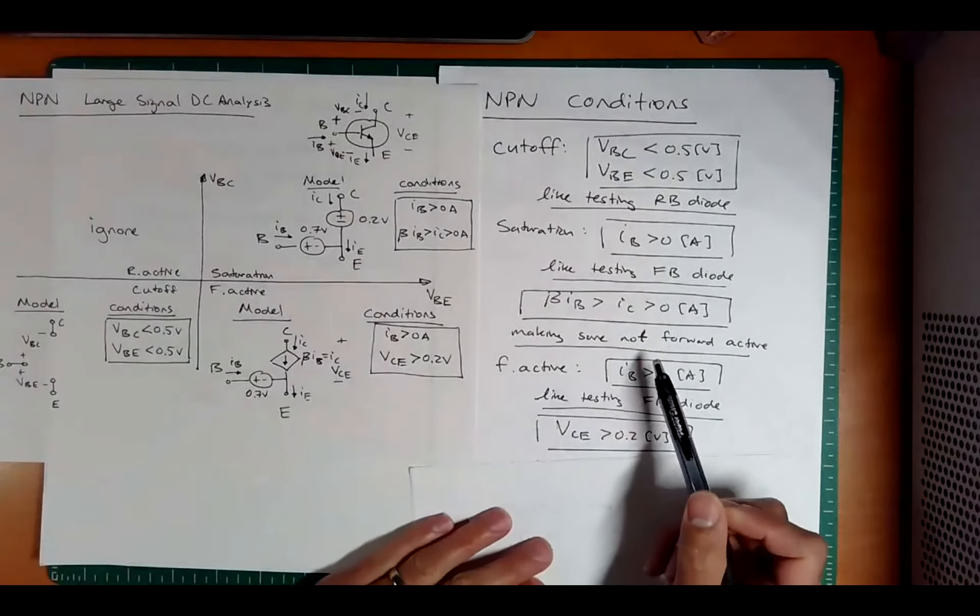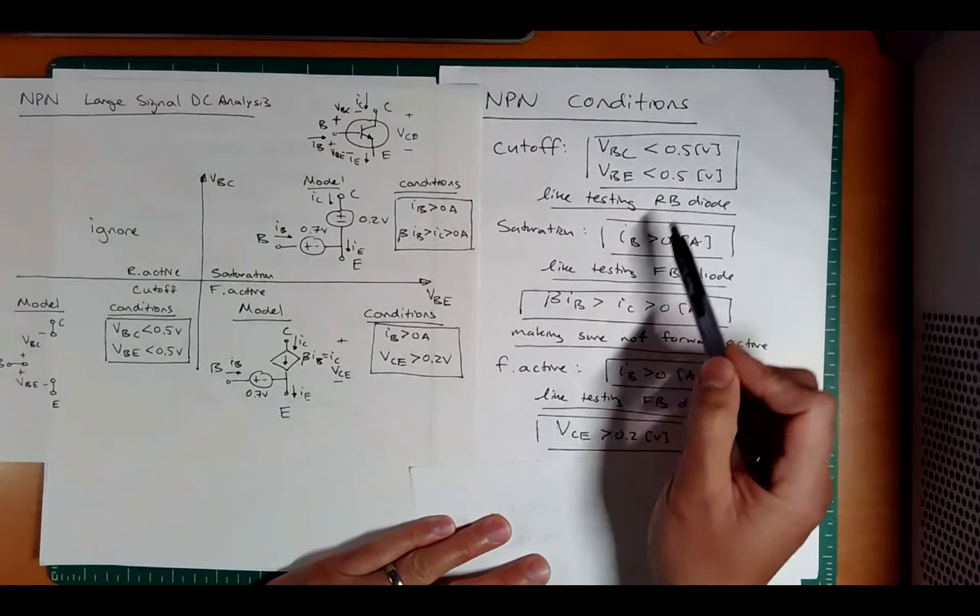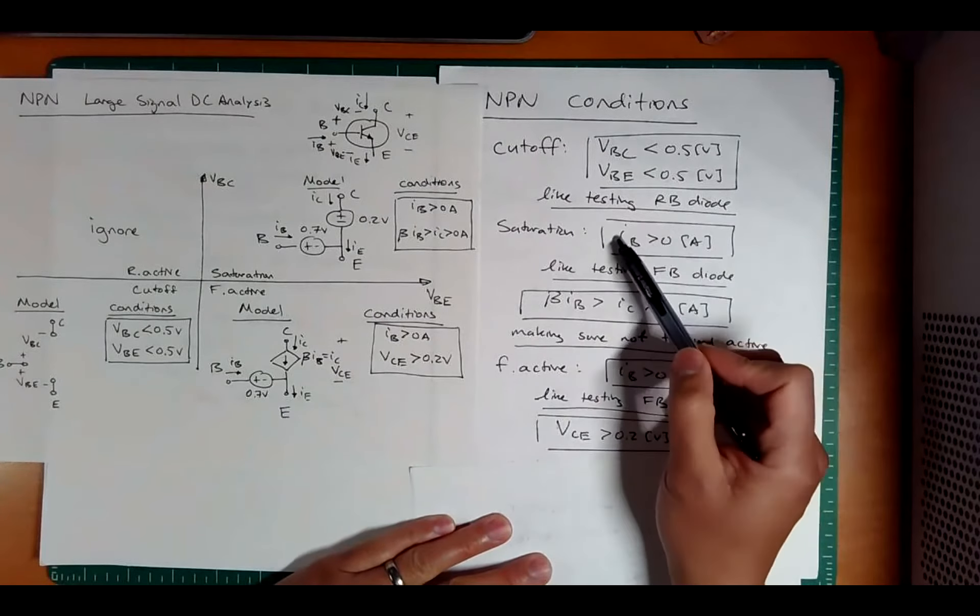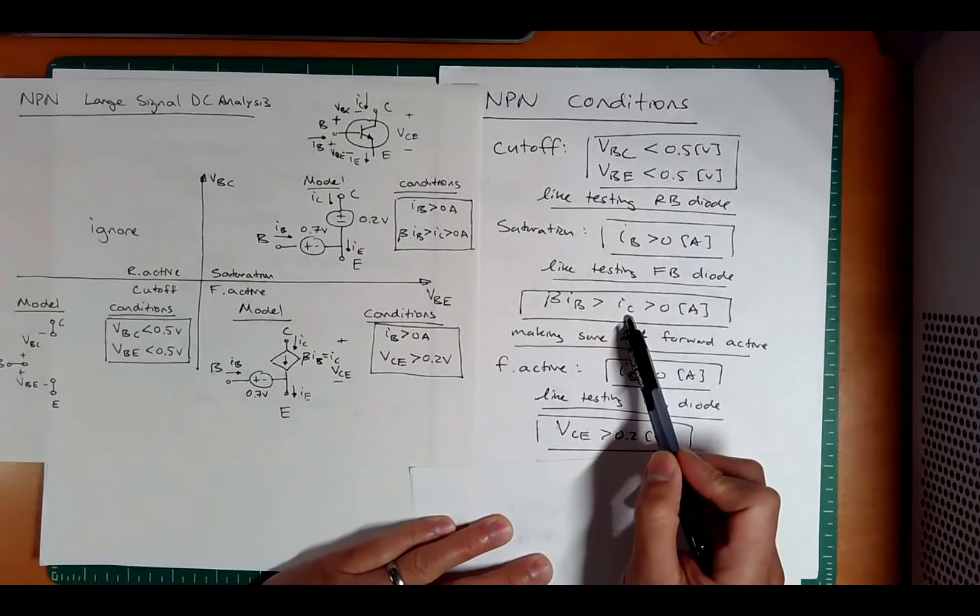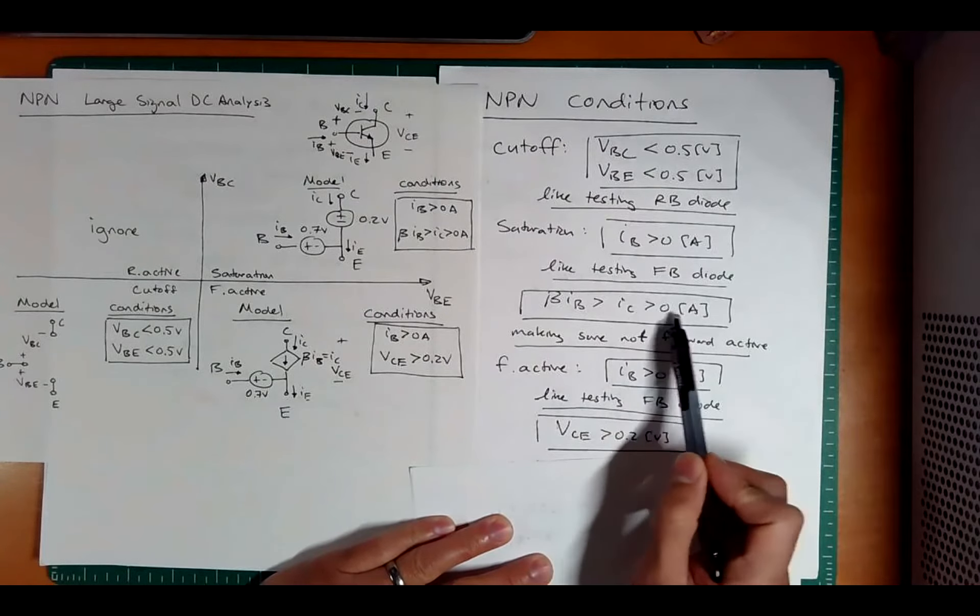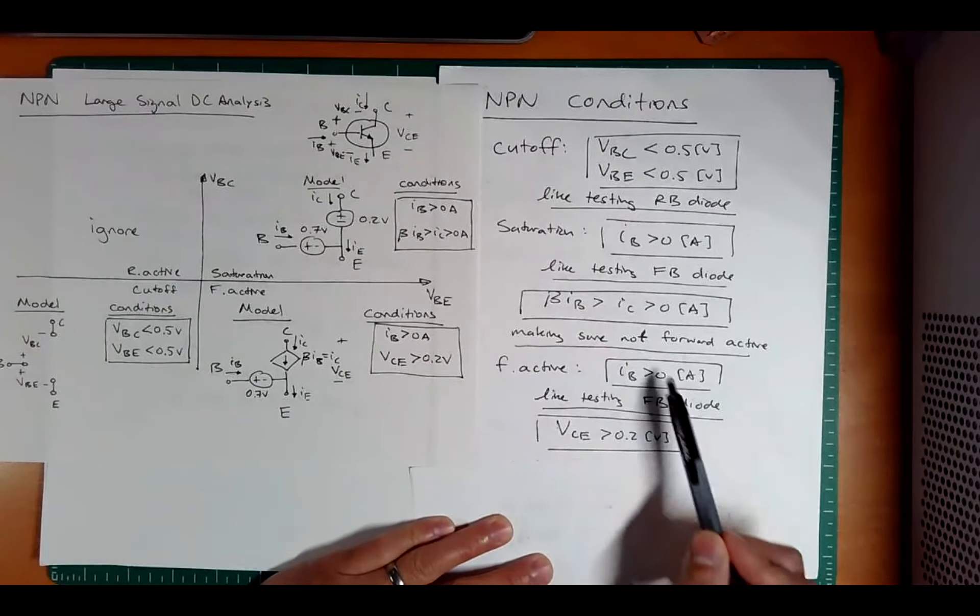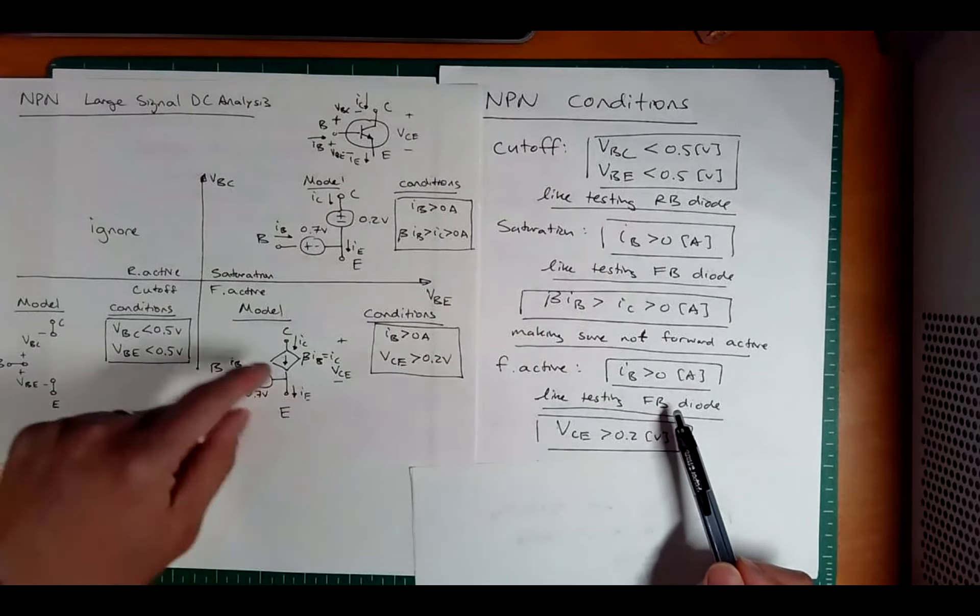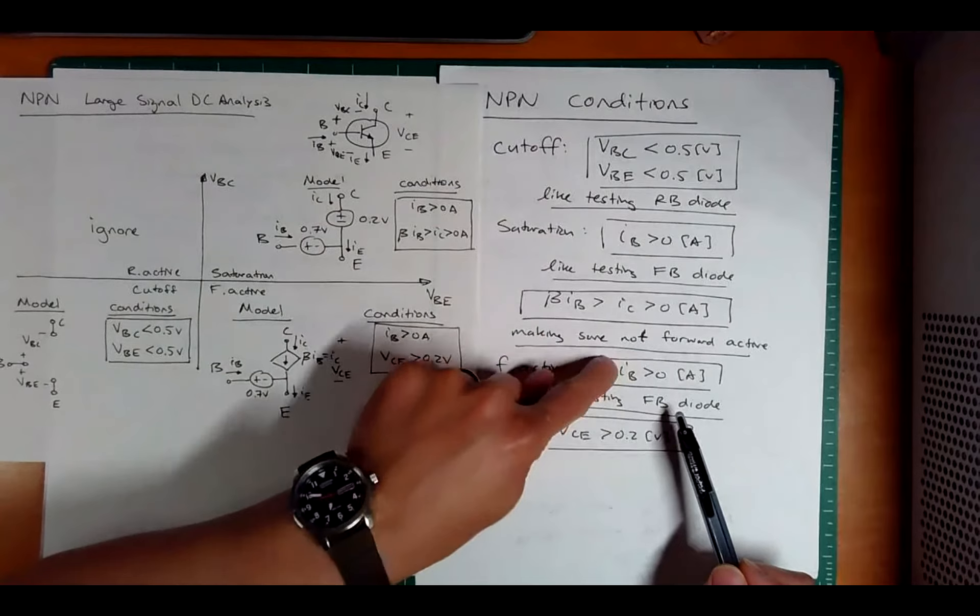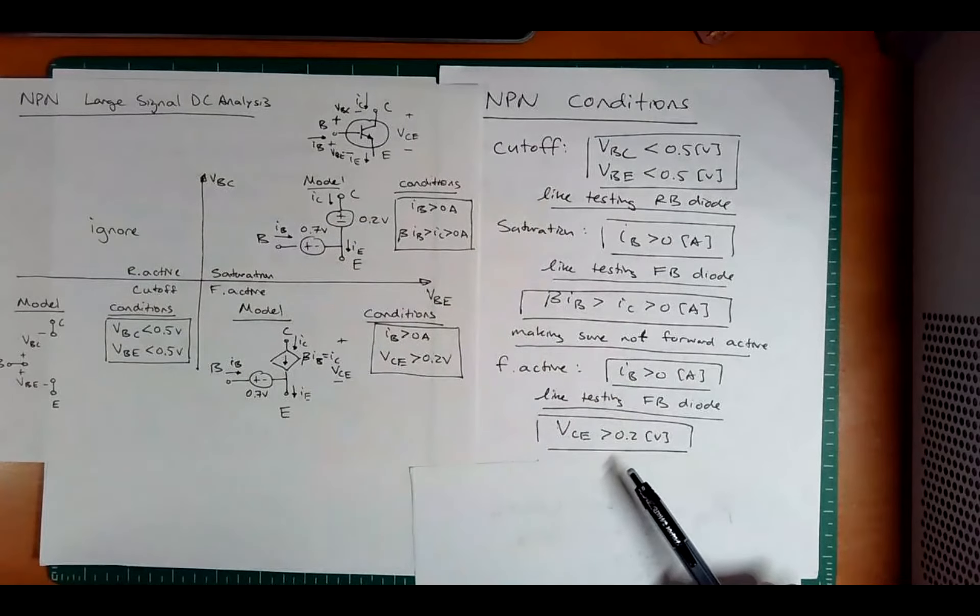So I just have that rewritten here. If you guess cutoff, make sure that the voltages are negative. If you guess saturation, make sure that the current is positive. And if the current is positive, we then go to this one check, make sure that the collector current is also positive and it's smaller than what beta IB would be. If it's forward active, you're going to guess this model and then check this and check this. This is going to tell you it's different from saturation.